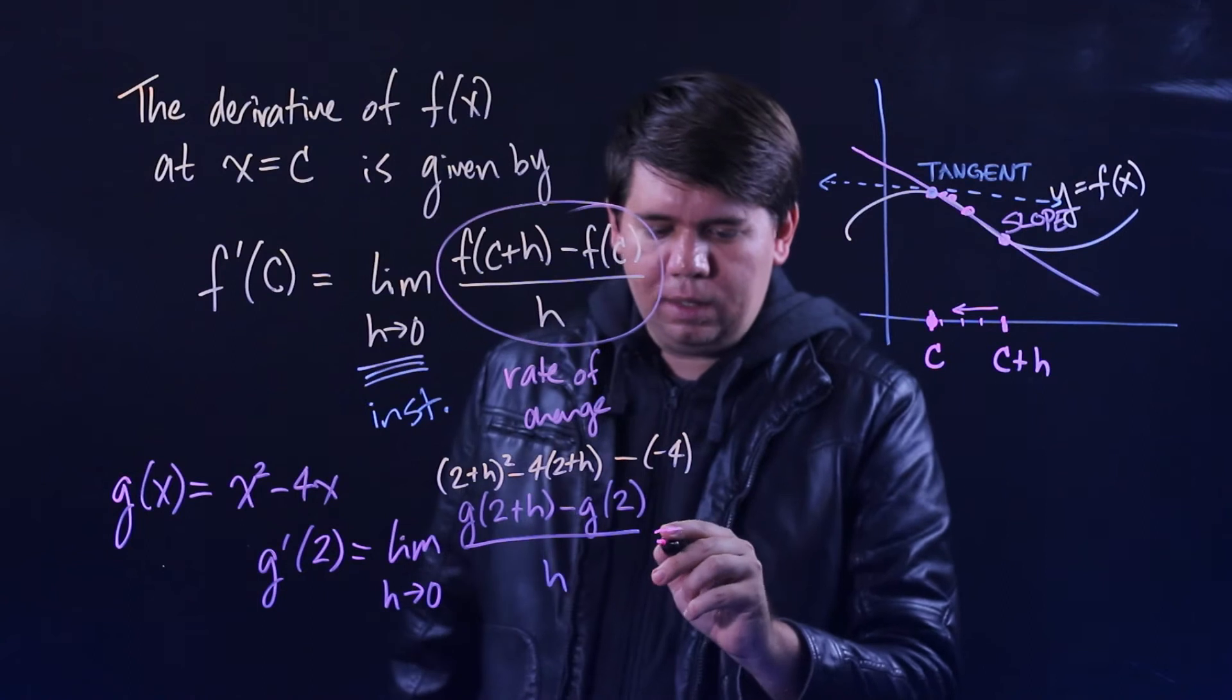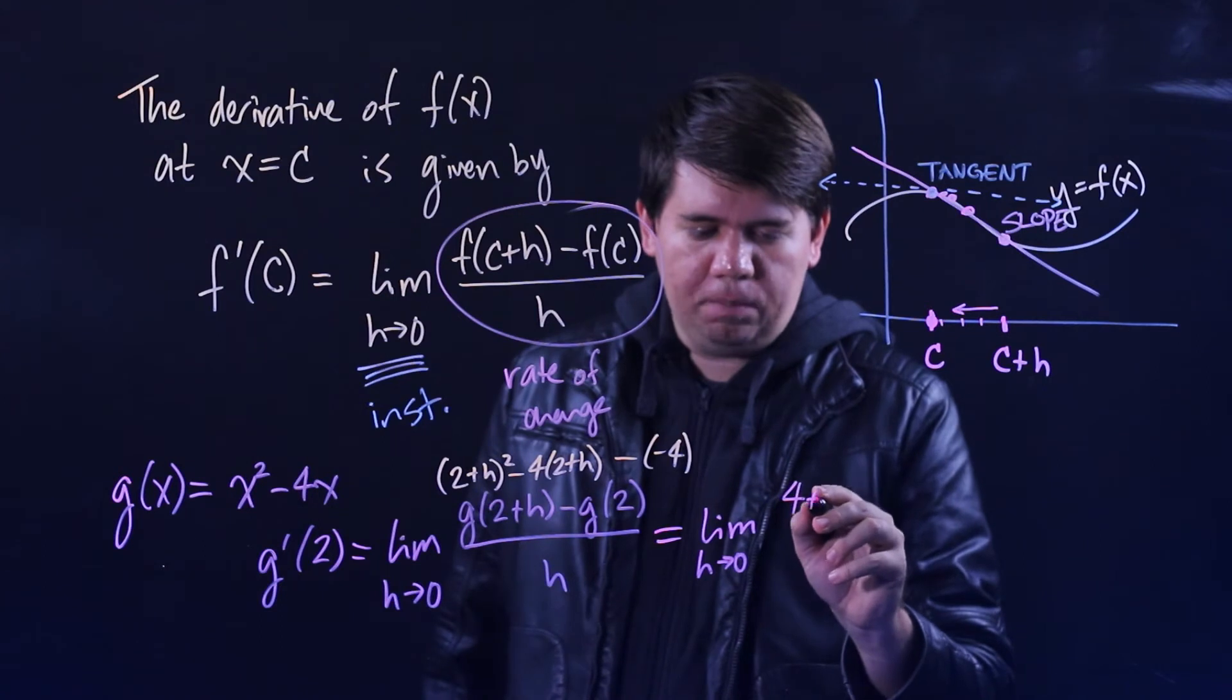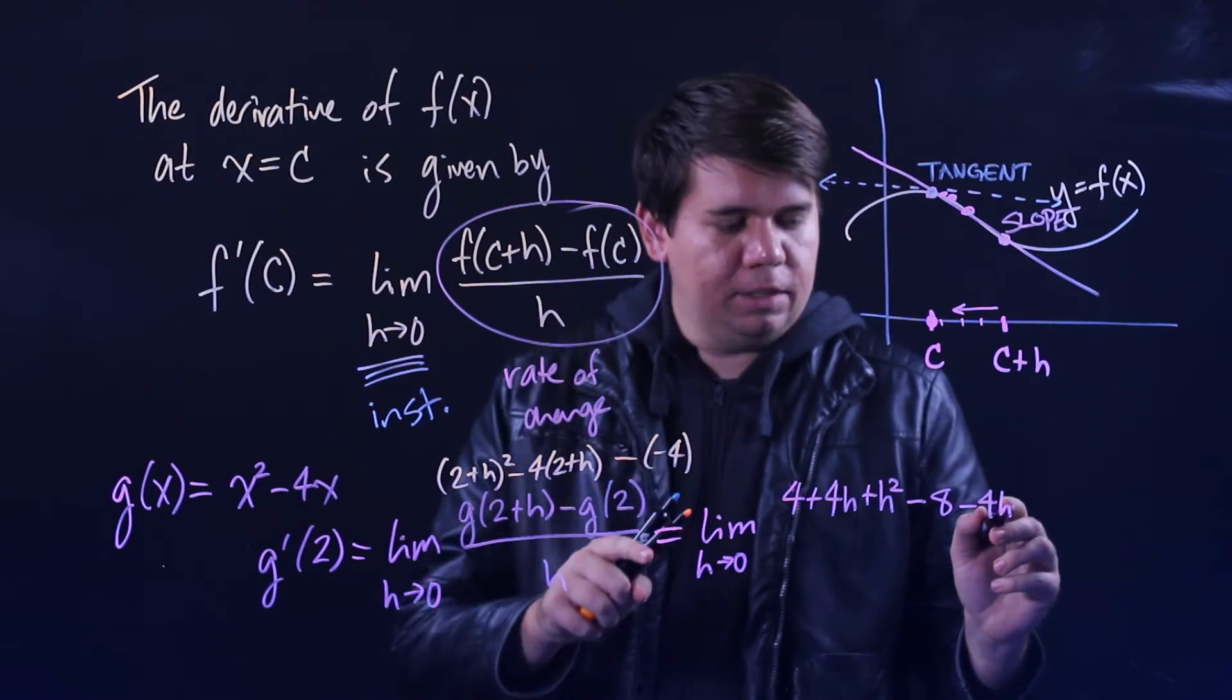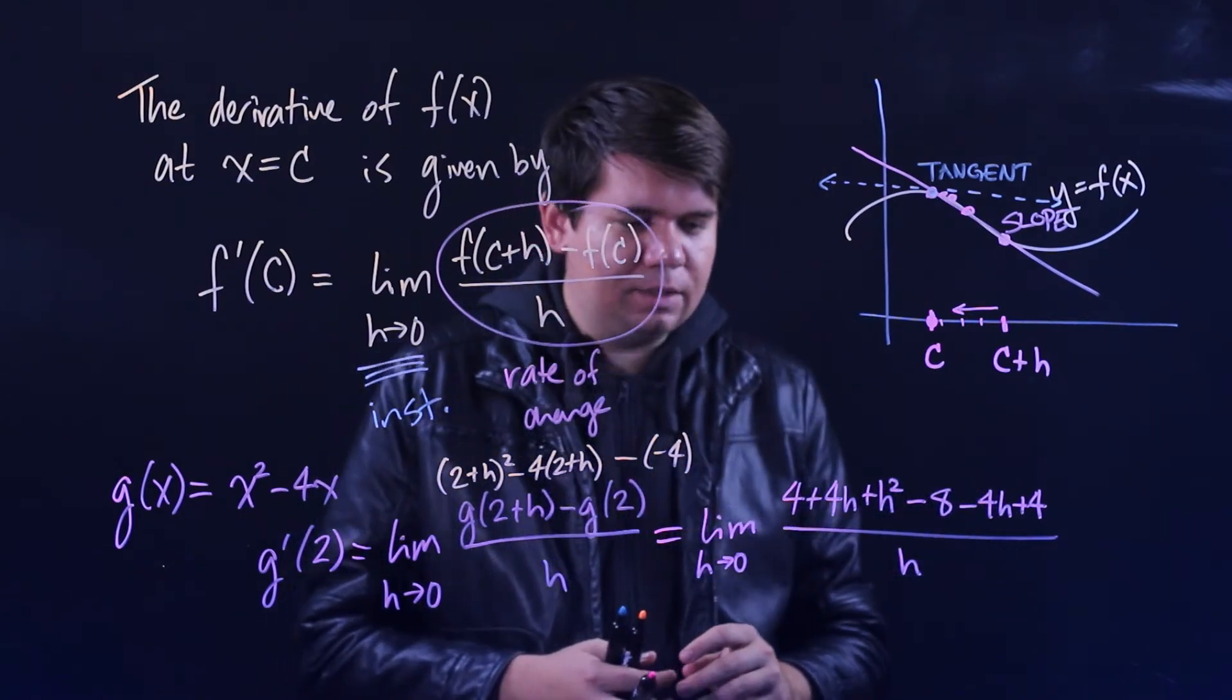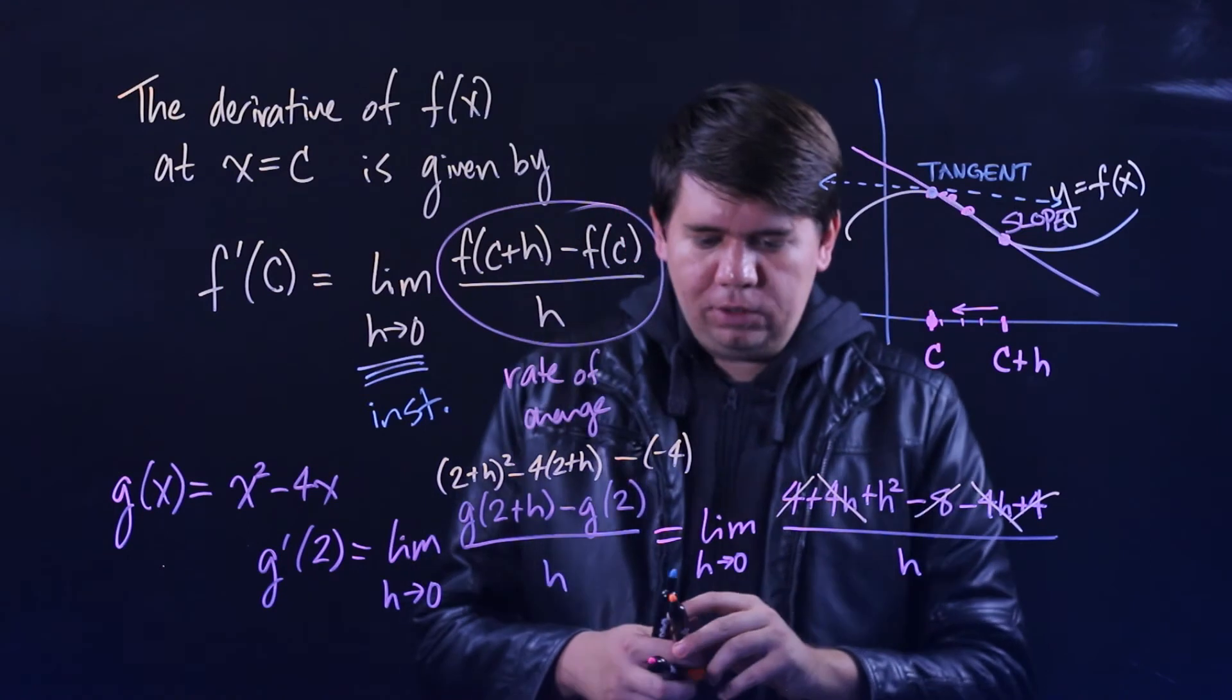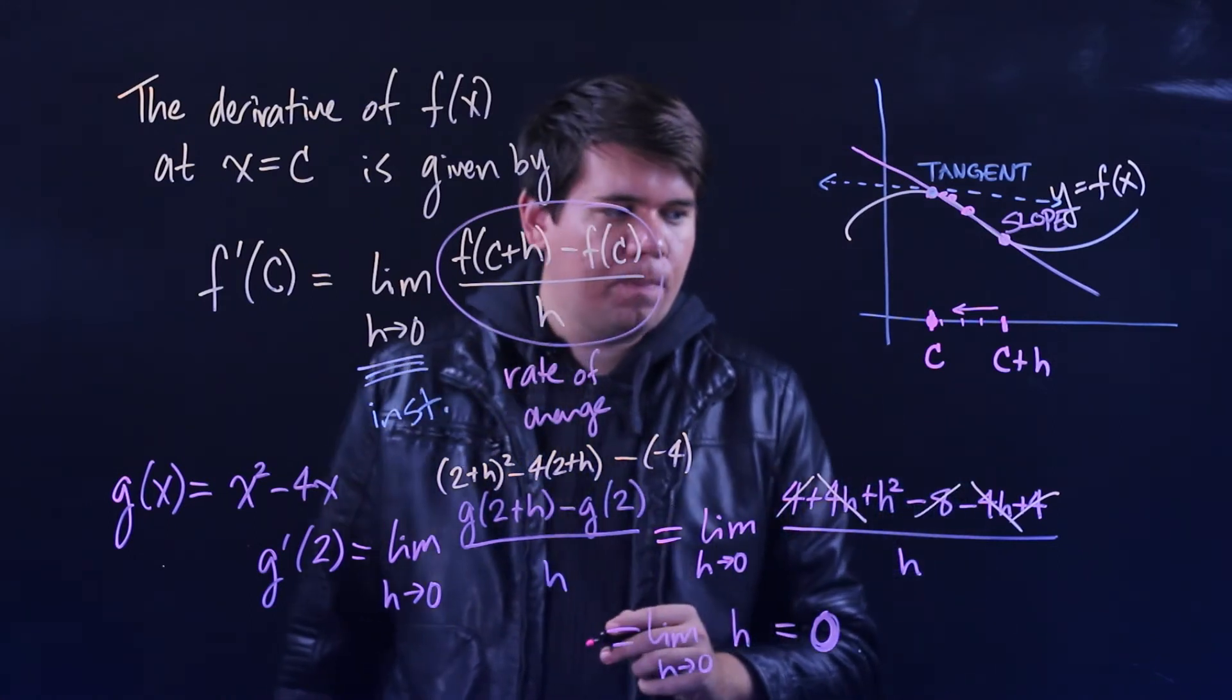So the top of this function will just become the limit as h goes to 0 of, we could expand it a little bit, (2+h) squared is 4 plus 4h plus h squared minus 4 times 2 is 8 minus 4 times h is minus 4h minus minus 4 so plus 4, all over on bottom we have this h. Let's go ahead and simplify a little bit. You have a minus 8 with a plus 4 and plus 4 so those cancel. You have a 4h and a minus 4h so those cancel, leaving you just h squared over h. That is you just have the limit as h goes to 0 of h squared over h which just reduces to a single h, so this is going to be 0.